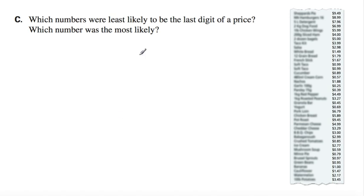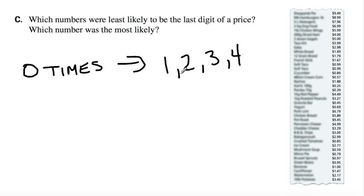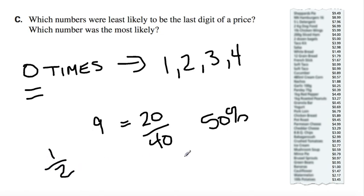The question is Part C: which numbers were least likely to be the last digit, which number was most likely? Well, we went through the data, and it said that the least likely, as in 0 came up no times, 0 times showed up. 0 times was 1, 2, 3, and 4. In analyzing your data, numbers 1, 2, 3, and 4 did not show up. What is the greatest probability was number 9. As we said earlier, they came up 20 out of 40 times for a frequency of 50%. 20 out of 40 is 1 half, so it came up half the time. Pretty simple stuff. It's all about analyzing your data.